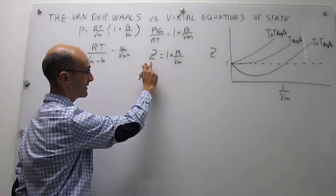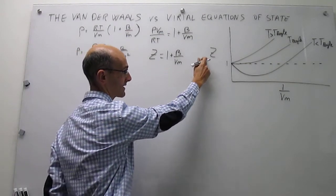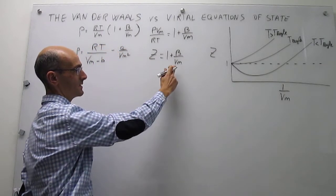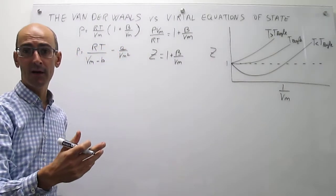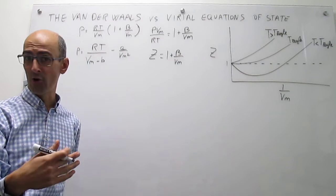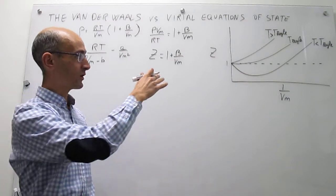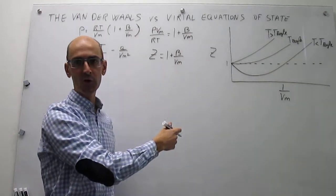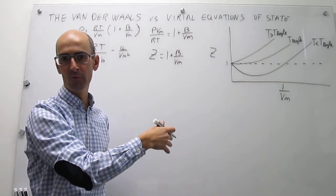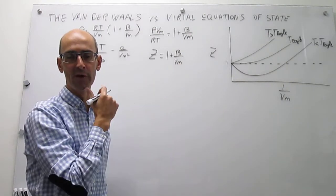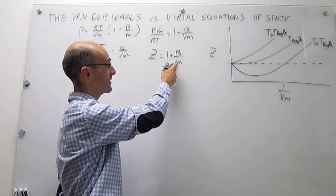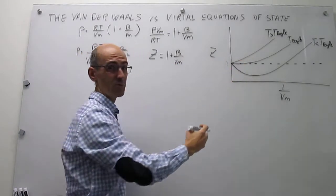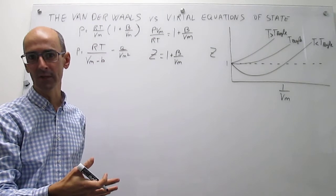This representation is exactly analogous to the graph discussed earlier. However, because we only have a linear term — no quadratic, cubic, or higher order terms in 1 over Vm — our lines will not be curved; they will actually be straight lines. That's fine, because we understand this is an approximation.